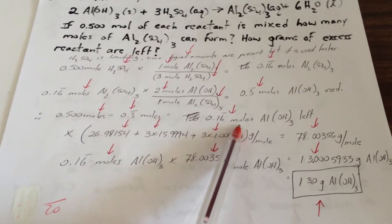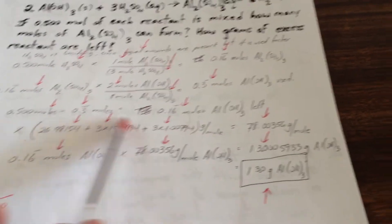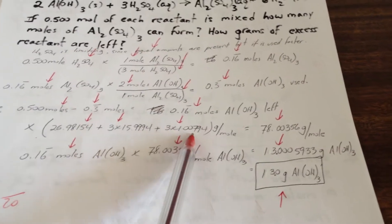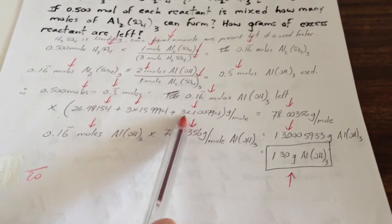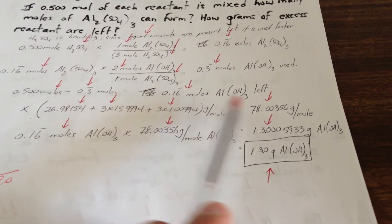And it tells us that we're going to have 0.16 moles of aluminum hydroxide left. Then we multiply by the molar mass of aluminum hydroxide. Here's the mass of aluminum. Here's the mass of oxygen times 3. And the mass of hydrogen times 3 as well. Gives you a molar mass of 78. So if you have that many moles times 78, which is what we do here,